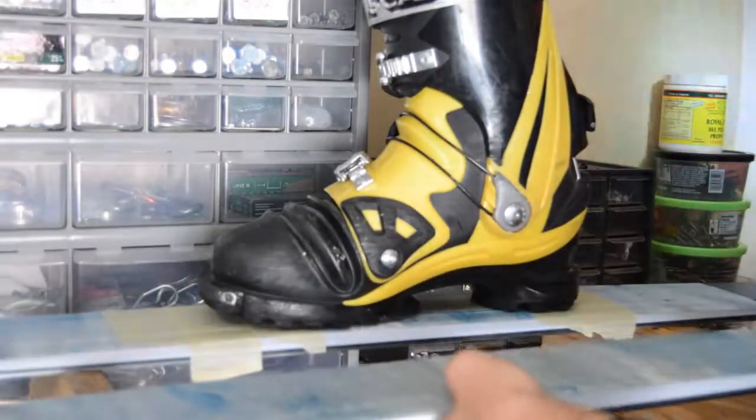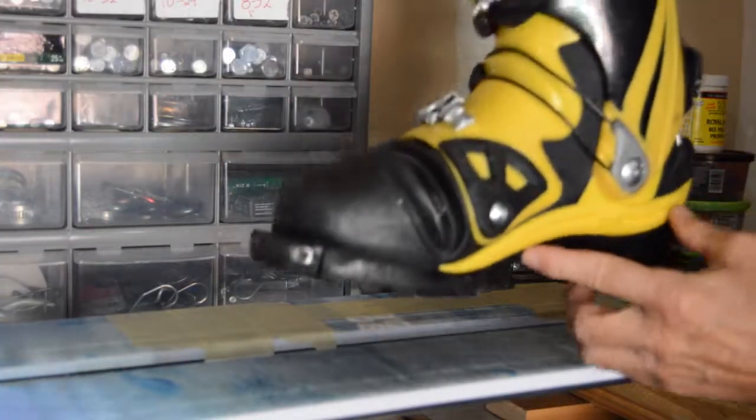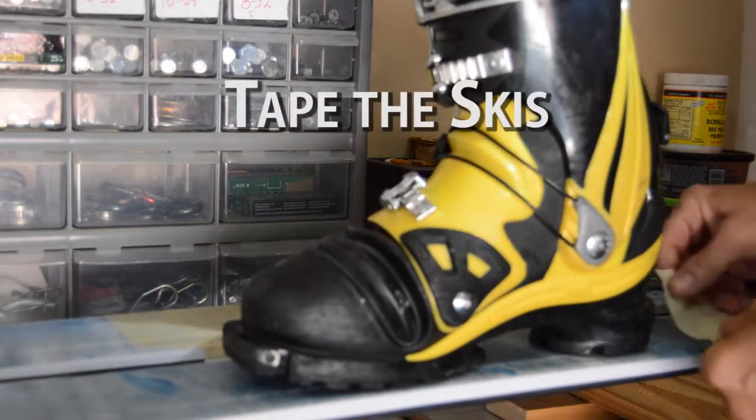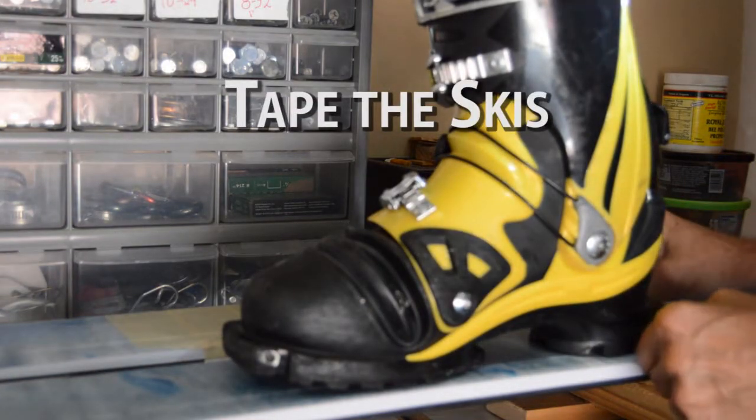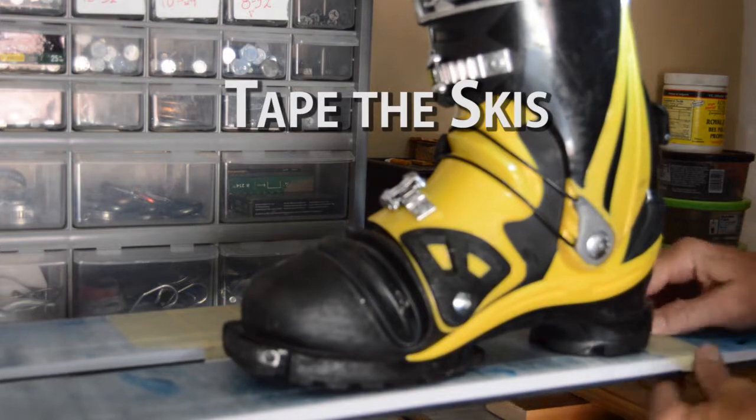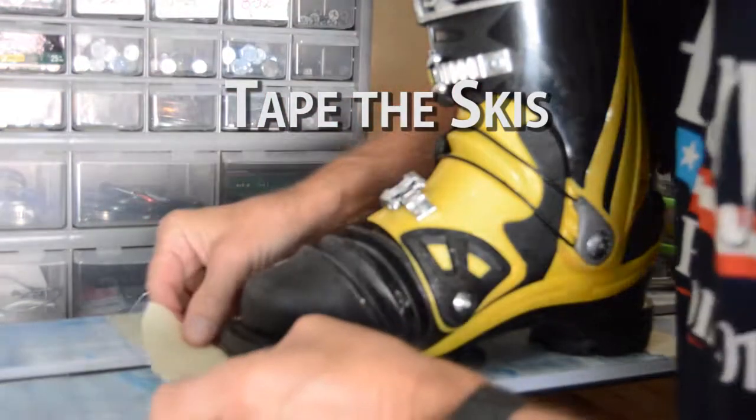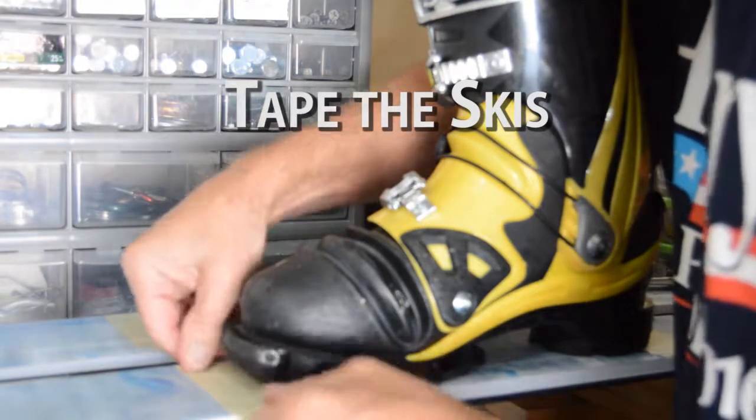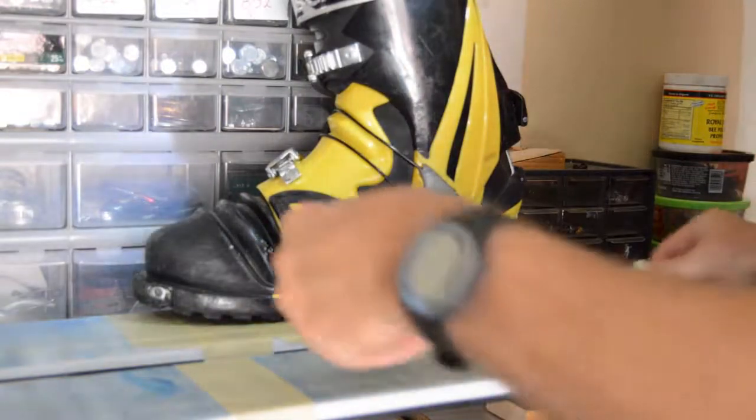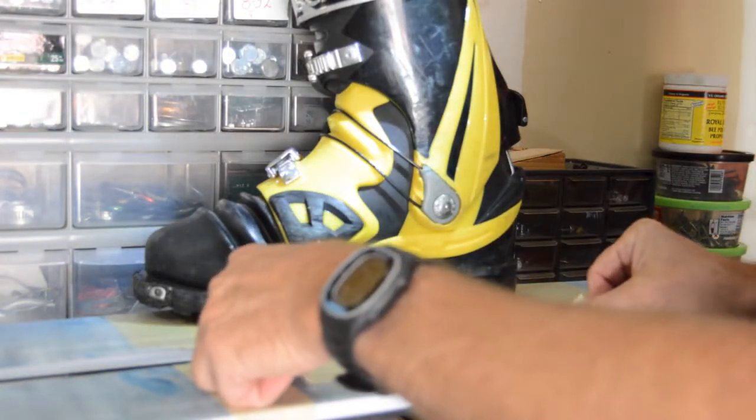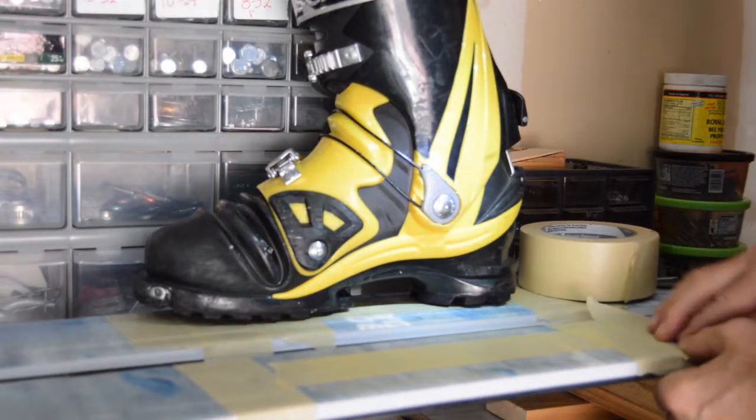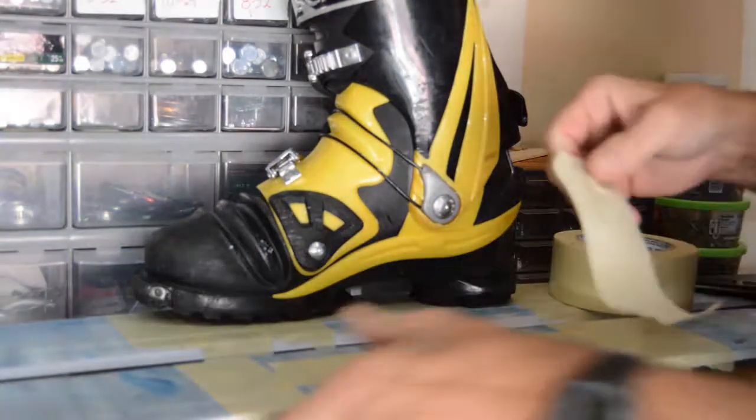The first step is to figure out where you want your boot to be. Boot center, where the manufacturers recommend it, I do that. Or shifted, or aft, your call. Whatever you decide, put the boot in that position, and then put masking tape on the top sheet around the toe and the heel, and then a strip down the center. You're going to use the masking tape to scribe lines corresponding to the center of the boot, and the center of the ski lengthwise, and then all the places where you're going to be drilling holes.